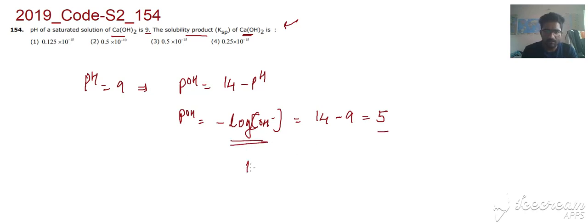Minus log OH minus is 5, that means OH minus concentration is equal to 10 power minus 5. I've just taken the antilog of minus log OH minus, which is 10 power minus 5.